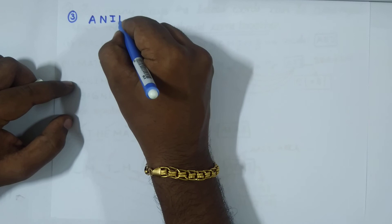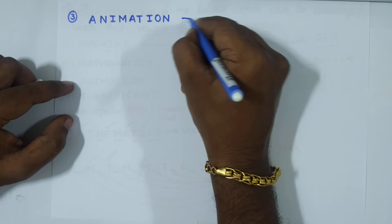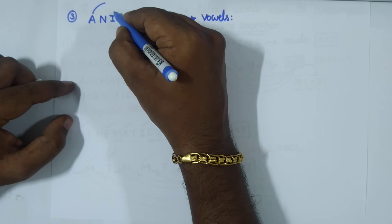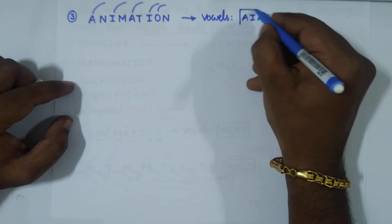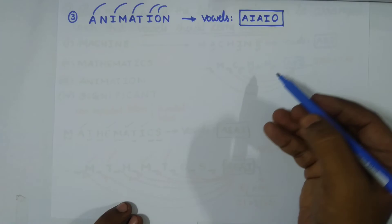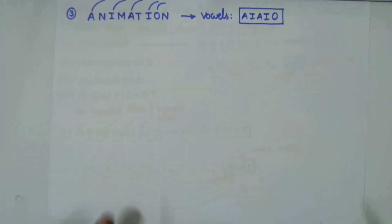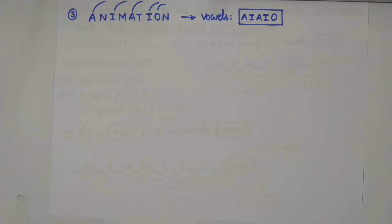The third word is ANIMATION: A, N, I, M, A, T, I, O, N. The vowels are A, I, A, I, O — five vowels. Note that A and I are each repeating in the vowel group, but we still write five factorial for the group in the numerator; the repetitions go in the denominator.